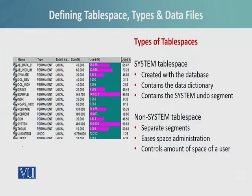There are two major types of tablespaces. The system tablespace comes up with the database installation, is created with the database, contains the data dictionary, and contains system undo segments. On top of this there is the auxiliary tablespace, which we will discuss later. Non-system tablespaces are separate; they provide space administration control over the amount and sizes available. Looking at the graph on the left-hand side, you can see how much space is available, how much is being used, and which tablespace is filled up. These graphs help the database administrator monitor sizes and availability, and SQL statements can also be used to retrieve this information.